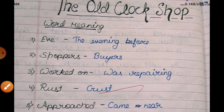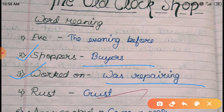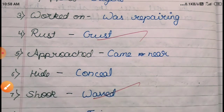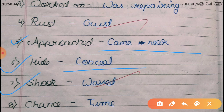Next: 'shoppers' means buyers; 'worked on' means was repairing; 'rust bust'; 'approached' means came near; 'hide'; 'concert'; 'shock'; 'waved'; 'chance'.